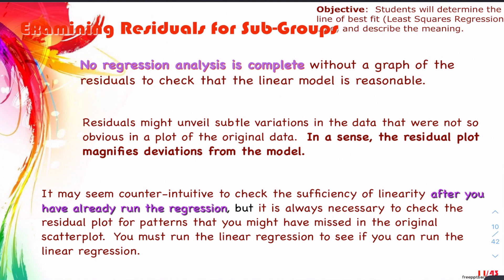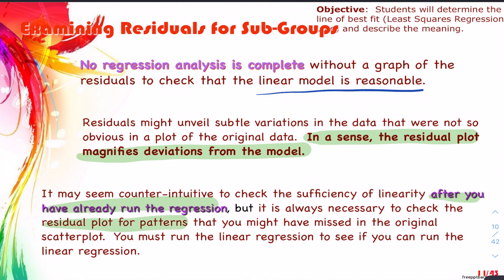No regression analysis is complete without a graph of the residuals — we use that to check if the linear model is reasonable. Residuals might unveil subtle variations in the data not obvious in the original plot. The residual plot magnifies deviations of the model. It may seem counterintuitive to check the sufficiency of linearity after you've already run the regression, but that is in fact what we do. You must run a linear regression to see if you can run the linear regression. We do the analysis, get the line, the R, the R-squared, the standard deviation of the residuals — and then look at the residual plot and ask: was this good, or should we think about different models?